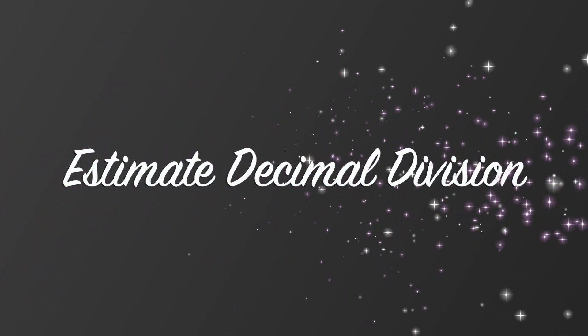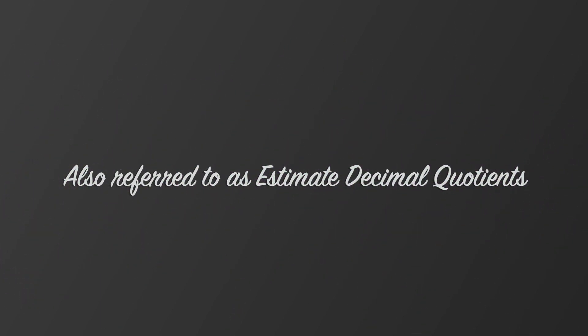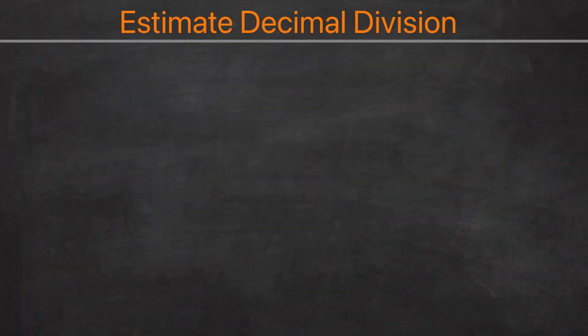In this video I'll be going over estimate decimal division, also referred to as estimate decimal quotients. So let's dive right into the first example: 31.2 divided by 5.22.